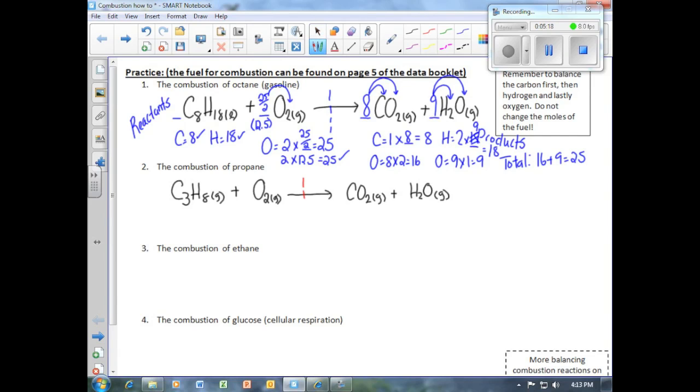We begin again by balancing the number of carbons. In propane, we have three atoms of carbon. On the product side in carbon dioxide, we have one. In order to make this balanced, we will need to multiply one by something in order to get three. If we look, three times one will give us three carbons, therefore making them balanced.